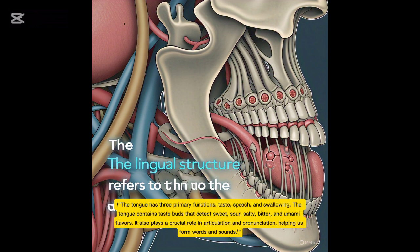The tongue has three primary functions: taste, speech, and swallowing. The tongue contains taste buds that detect sweet, sour, salty, bitter, and umami flavors. It also plays a crucial role in articulation and pronunciation, helping us form words and sounds.